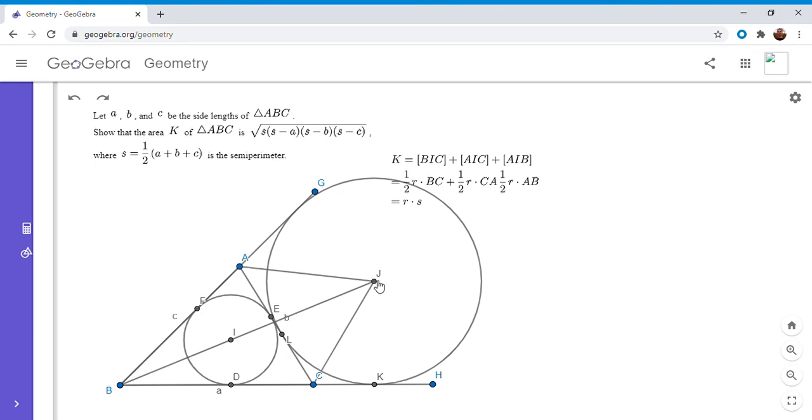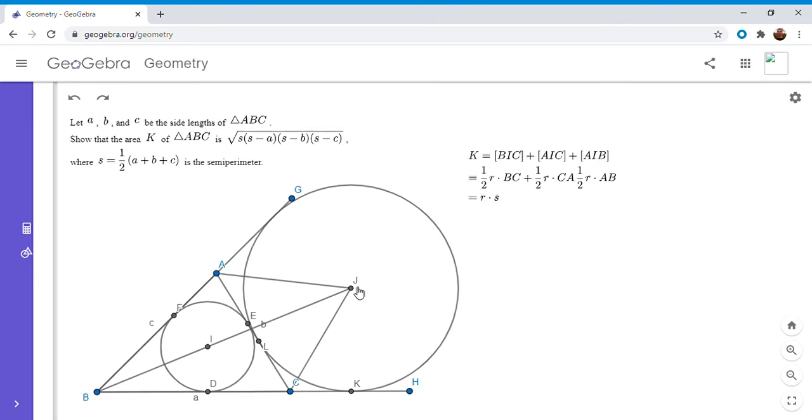And the center of that excircle—I'm going to move things a little bit—the center of it has to lie on the angle bisectors of three different angles. First of all, it lies on the angle bisector of ABC. That's true because it has to be equidistant to the lines AB and BC. And then it also has to lie on the angle bisectors of GAC and HCA because it's equidistant to each of those pairs of sides. This is kind of similar to the idea that the internal incenter has to be on the angle bisector of all three angles.